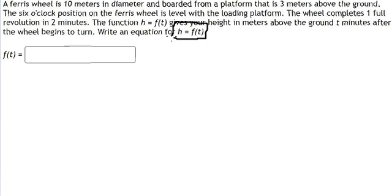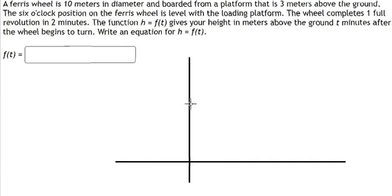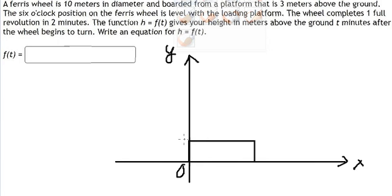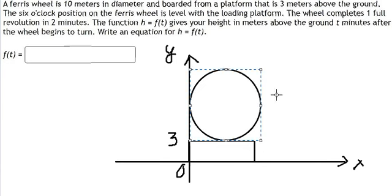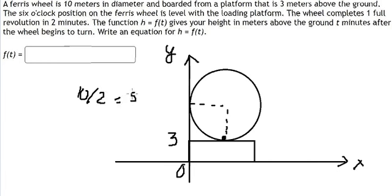The first thing we need to do is draw the diagram. We have the platform above the ground — this is about three meters. On the platform we have the wheel, and we know that the starting location is at six o'clock. The diameter of the wheel is about 10 meters, so the radius is 10 divided by 2, which equals 5. So the center of the wheel is located at 3 plus 5, which is about 8 meters above the ground.